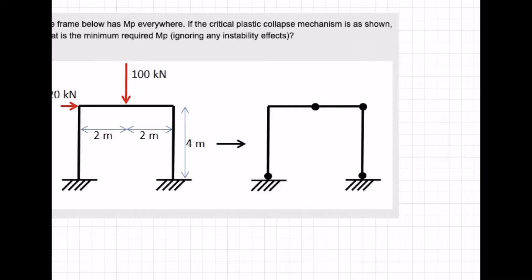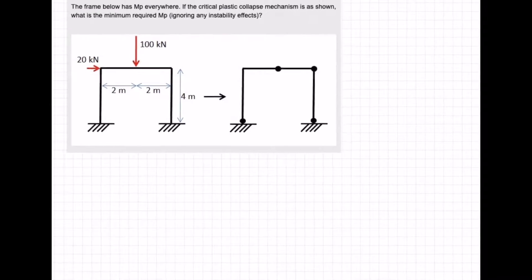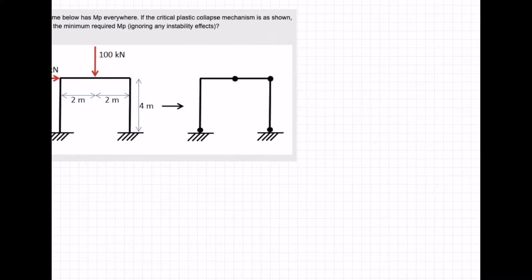Here we have a question about plasticity, which can scare some people, but hopefully not. I'll show you how. This frame has MP everywhere. If the critical plastic collapse mechanism is as shown, what is the minimum required MP, ignoring any instability effects? This frame on the left is being pushed to collapse by these two forces.